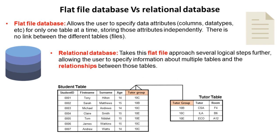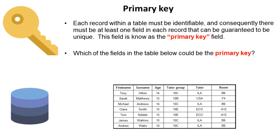We've looked at this concept already. Here in this example, we have two tables joined by a relationship. We can say that many students can belong to a tutor group, or that one tutor group can contain many students. We've also discussed the importance of identifying a field in each database table which must be able to uniquely identify each record — and we call this the primary key.